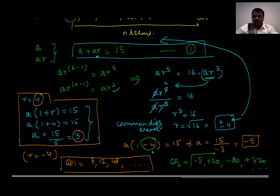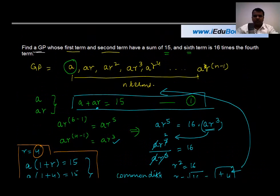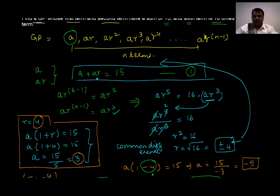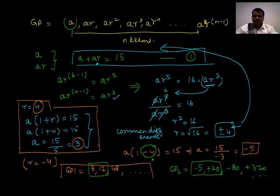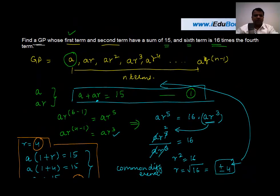Again, if you see, the sum of the first two terms here is 15 and here also it's 15. So my first condition is met, and the sixth term is 16 times the fourth term. Just try this out and you will get the answers as correct.